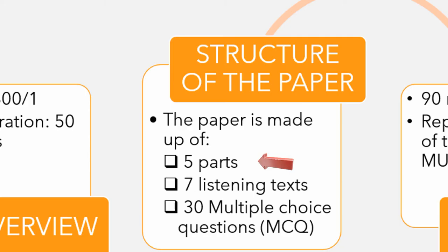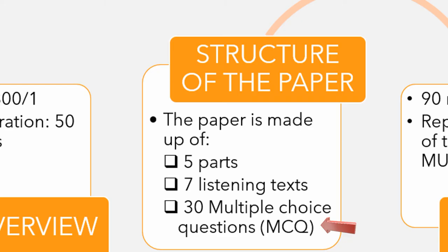The listening paper is made up of five parts: Part 1, Part 2, Part 3, Part 4, and Part 5. You will get seven listening texts in total — one text for each part from Part 1 to Part 4. However, for Part 5, you will get three different listening texts which are going to be a little bit short, more complex, and made up of three different topics. The paper is made up of 30 multiple choice questions, with options A, B, or C.